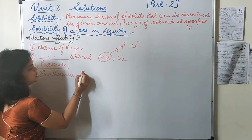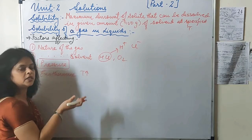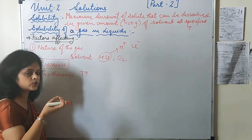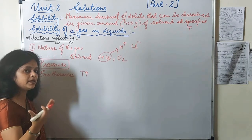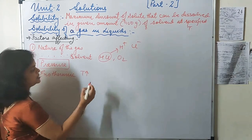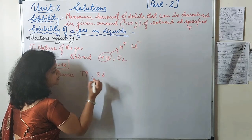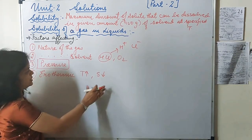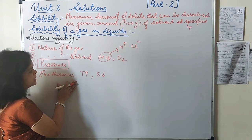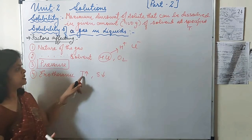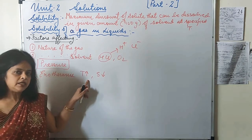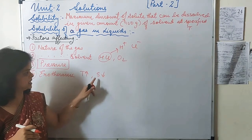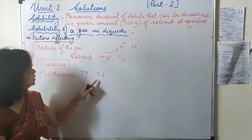When temperature increases, the gas that has dissolved is expelled out. That means the solubility decreases. So, since dissolution is exothermic, as temperature increases, the dissolution of gases decreases — that is, the solubility decreases.